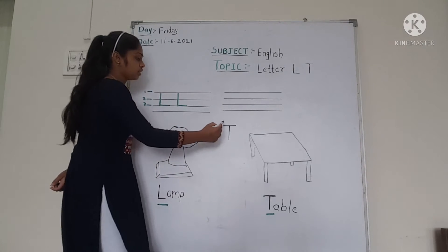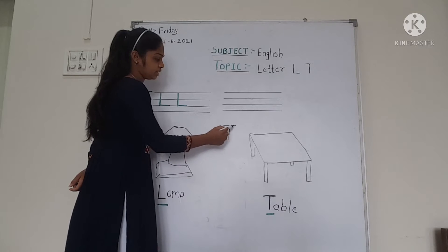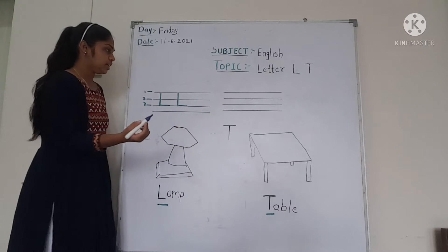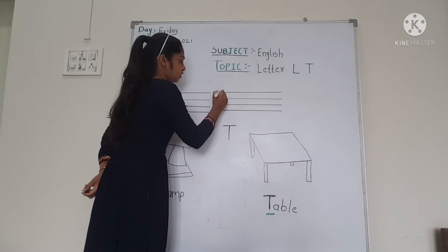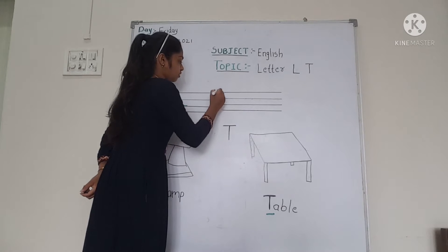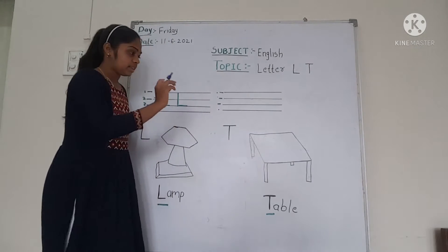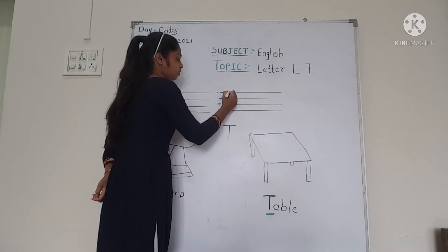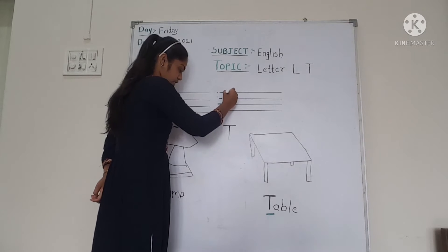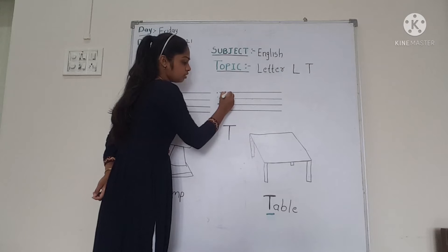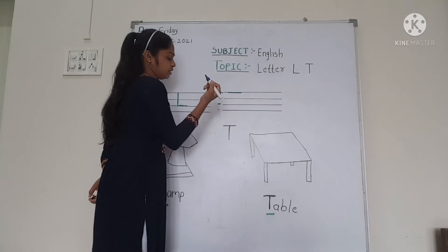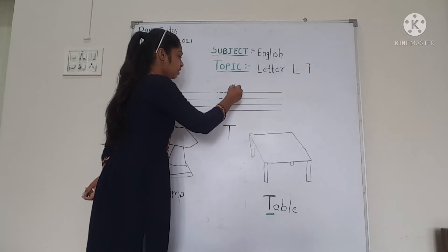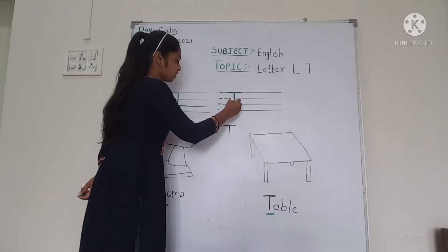Second letter T. So first of all, first line. One, two, three. Draw one line. So first draw sleeping line.